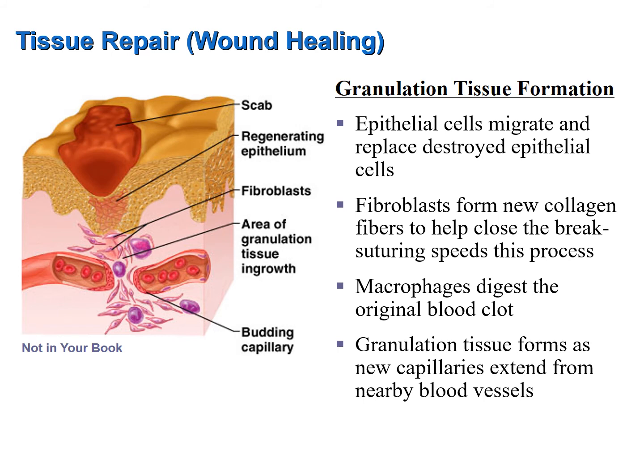This new granulation tissue is very tender. The capillaries are very superficial, which is why picking a scab typically results in bleeding — those capillaries are just underneath the scab and subject to rupturing very easily.